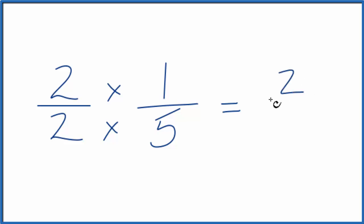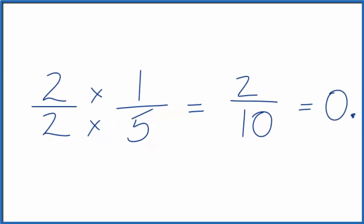Two times one is two. Two times five, that's ten. So that's an equivalent fraction. One-fifth and two-tenths, they're both equal to zero point two.